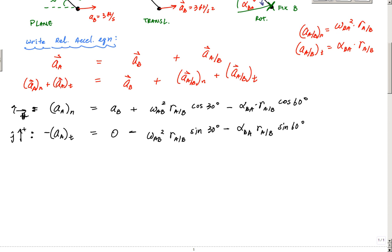Let's take a look at what I know and what I don't know. I know AB, the magnitude is 3 feet per second squared. I know RAB, cosine 30, cosine 60. But I don't know AAN, I don't know the angular velocity, I don't know the angular acceleration BA, and I don't know the tangential component. I've got four unknowns and two equations.